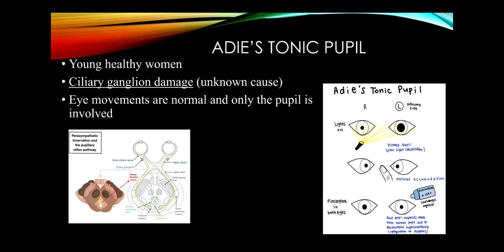Adie's tonic pupil occurs in healthy younger women, with the lesion in the ciliary ganglion — the relay nucleus from the Edinger-Westphal nucleus. Sympathetics are relatively overactive, producing a dilated pupil. Eye muscles are unaffected; light doesn't constrict the pupil, but over time accommodation is preserved. Parinaud's syndrome: a dorsal midbrain lesion (e.g., pineal tumor) causes vertical gaze paralysis, light-near dissociation of pupils, eyelid retraction giving an astonished appearance, convergence-retraction nystagmus, and hydrocephalus from cerebral aqueduct compression.